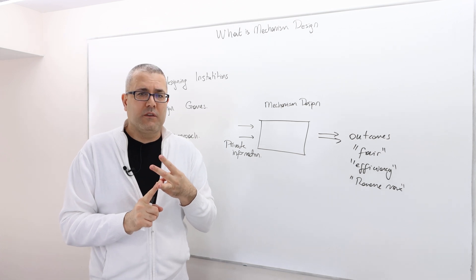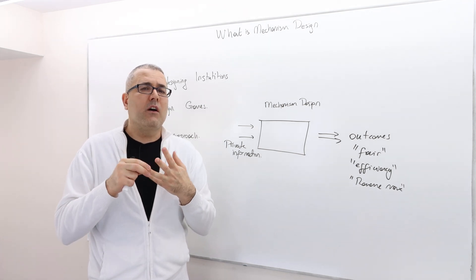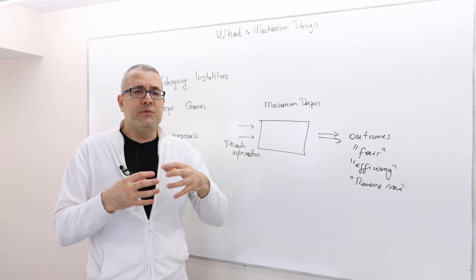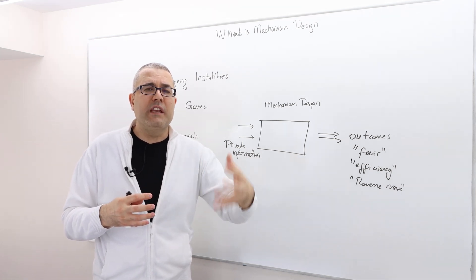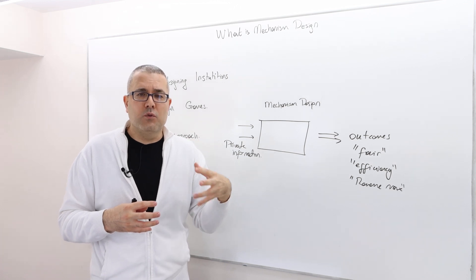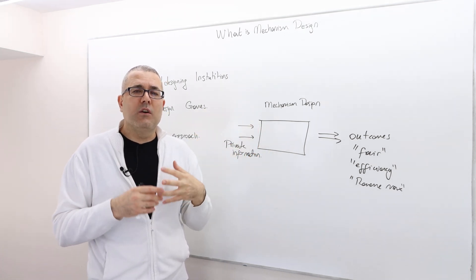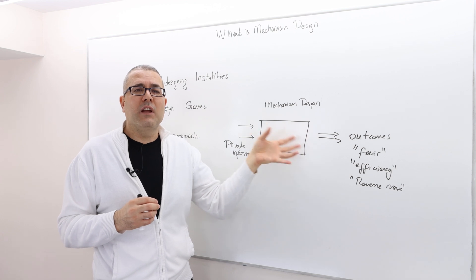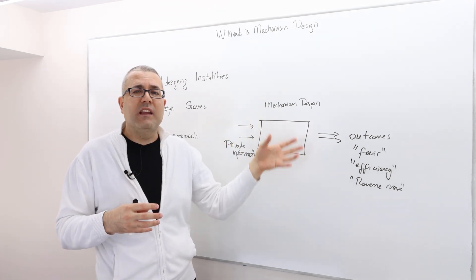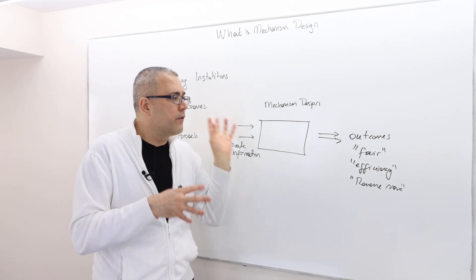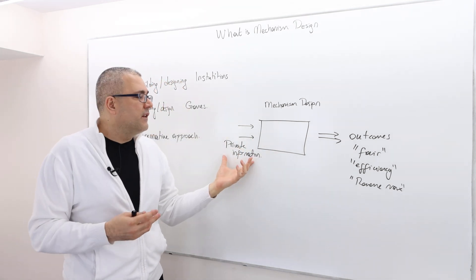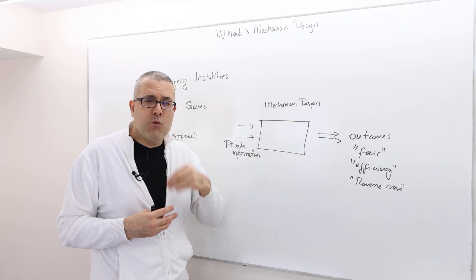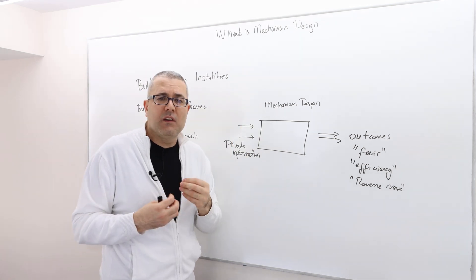Then what is the other important ingredient of a game? If you remember, it's the payoff — the incentives of the players. If we don't know the players' objectives, we don't know how they are going to react under a certain set of rules or institution. So the mechanism designer needs to know the payoffs of the participants, so that he can say the outcome will be efficient, fair, or revenue maximizing.